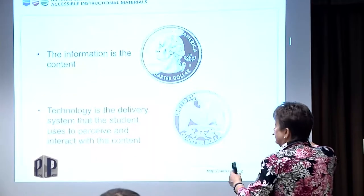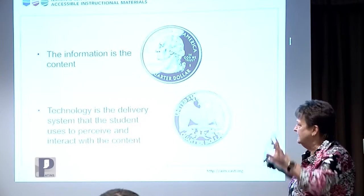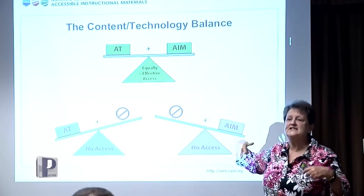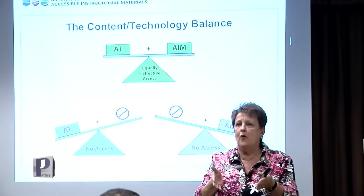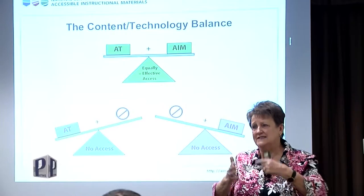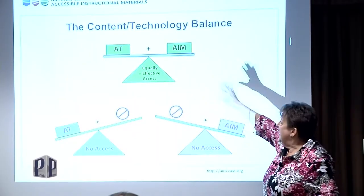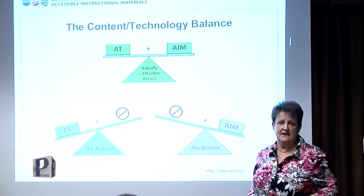When thinking about accessibility: if a particular piece of technology is required for someone to have access to their content and interact with it, for that individual, that piece of technology is AT — whether you bought it at Walgreens or the Apple Store. If your technology matches a student's needs and abilities and you have malleable, flexible, well-designed content together, you have equally effective access. But if your AT doesn't match a person's needs and abilities, even if your content is fabulous, there's no access. And the same the other way — technology works great but content isn't malleable, no access.